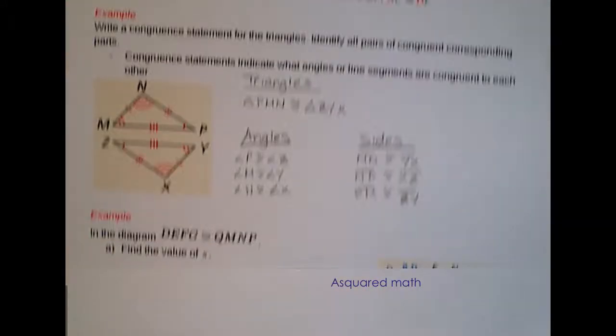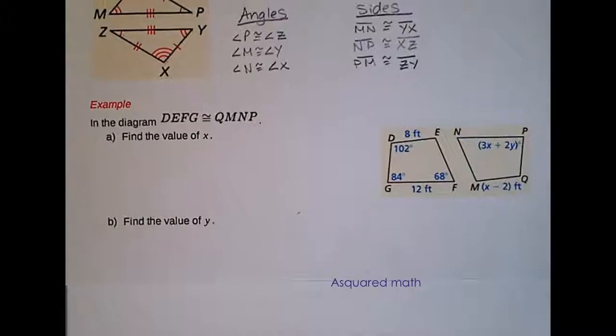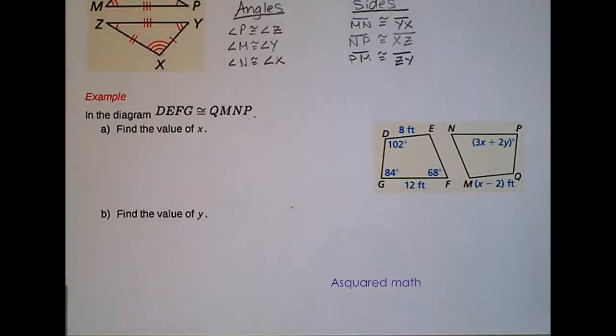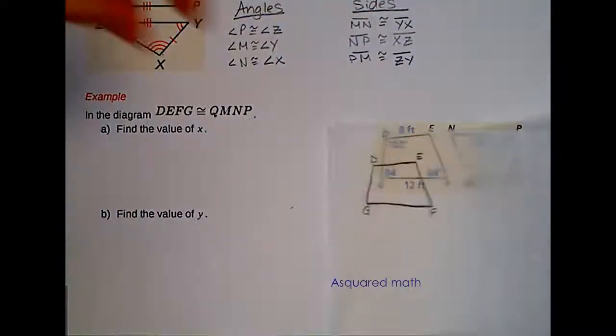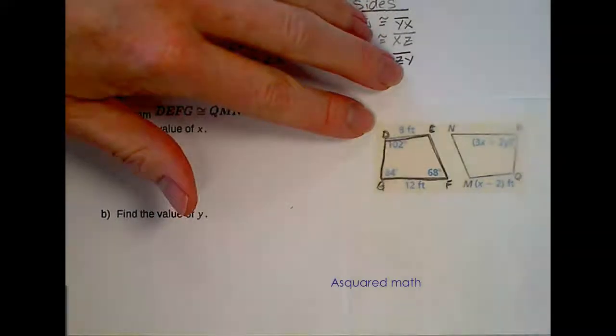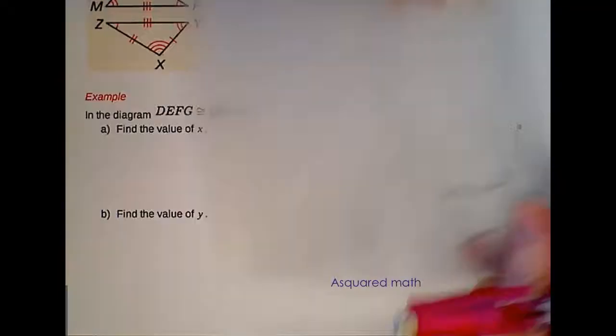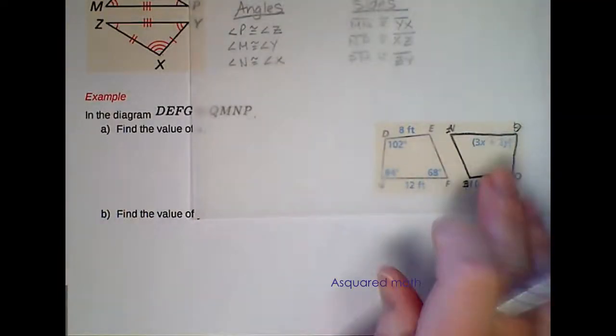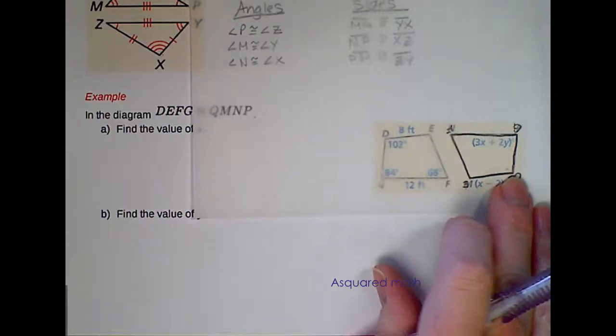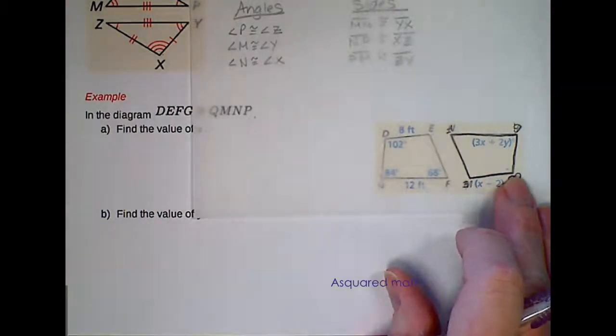The next example I have for you takes it a little bit further because now we're going to actually solve for variables, and we have to line up our shapes so that we know what angles are congruent to each other because they don't tell us in this picture. So if you're ever unsure, take a piece of paper, trace one of your figures and mark the angle measures, and then rotate it or reflect it onto the other figure.